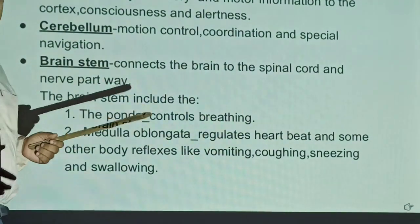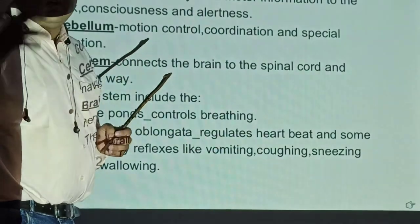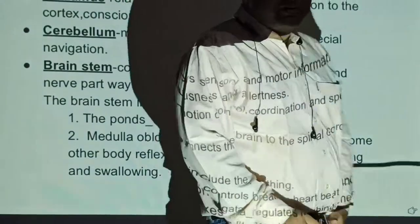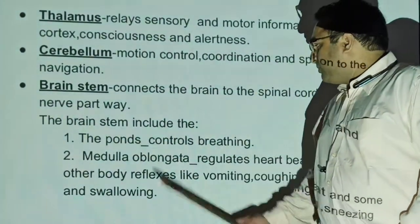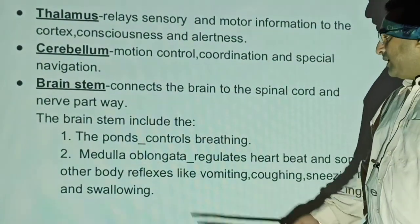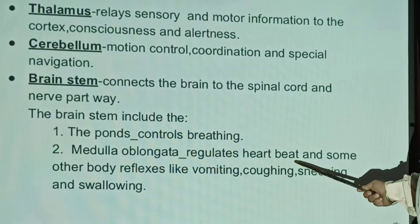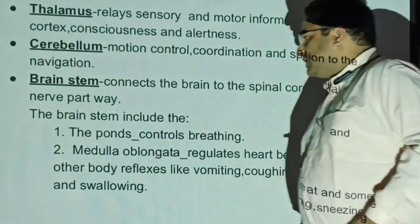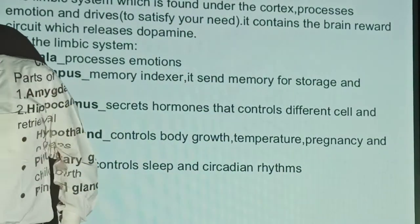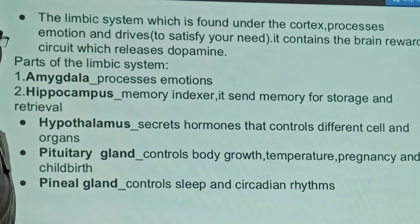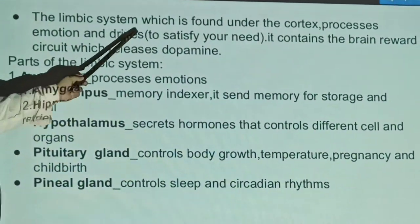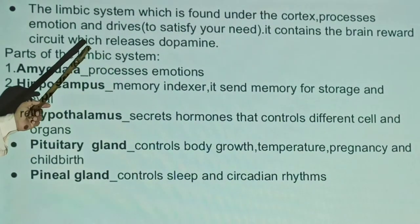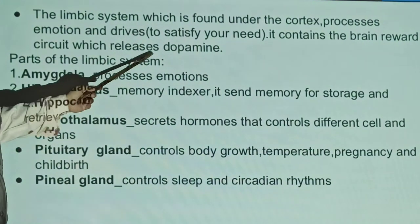Next is the brainstem. The brainstem controls body reflexes like vomiting, coughing, sneezing, and swallowing. The limbic system is found under the cortex and processes emotions and drives. It contains brain areas that release dopamine.